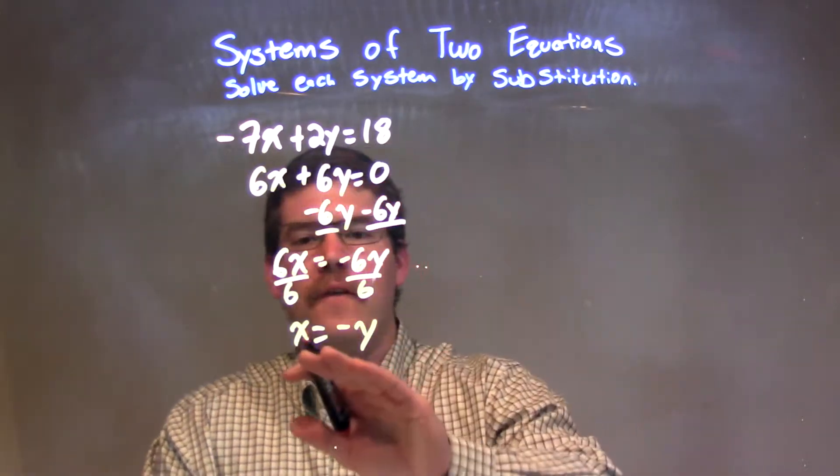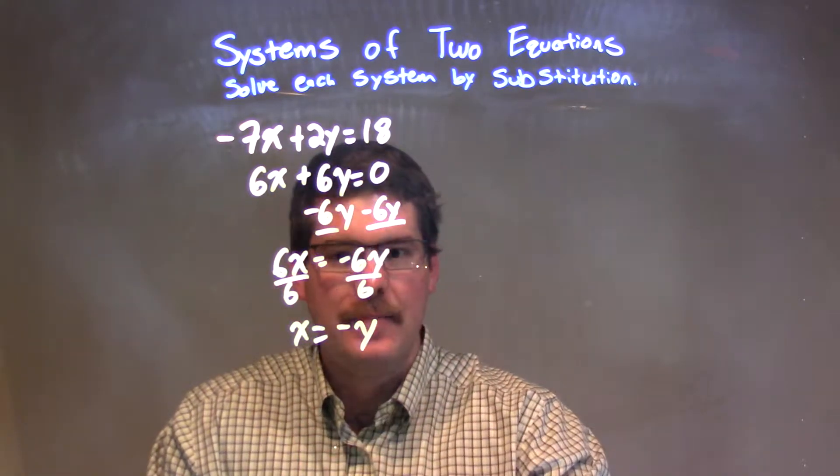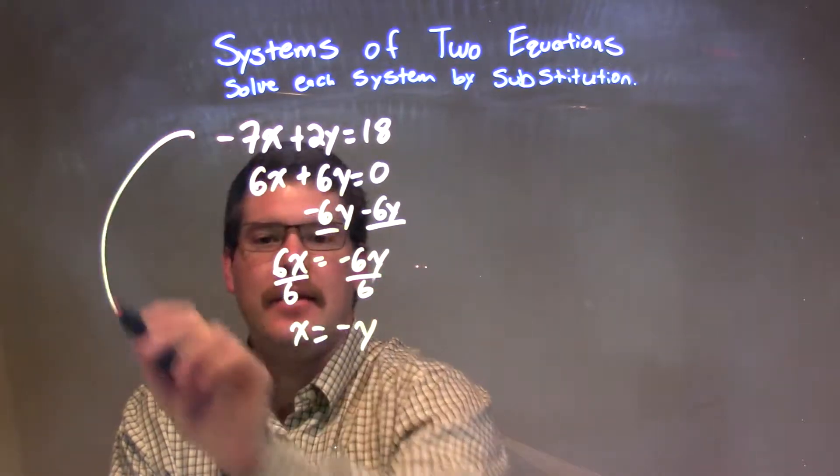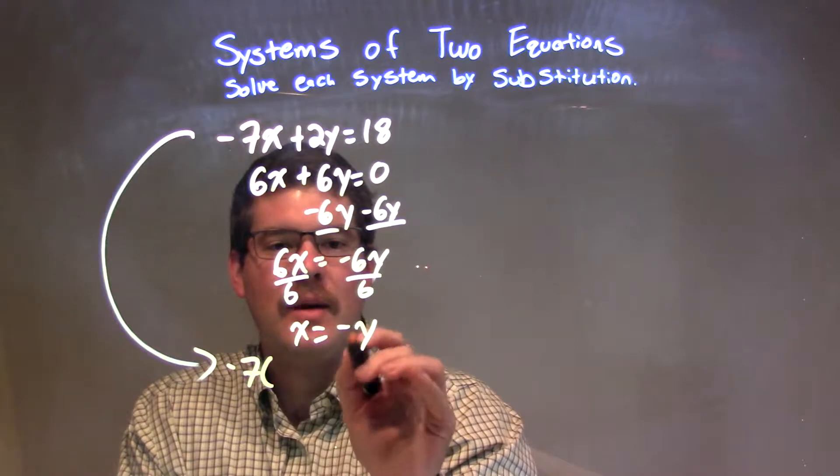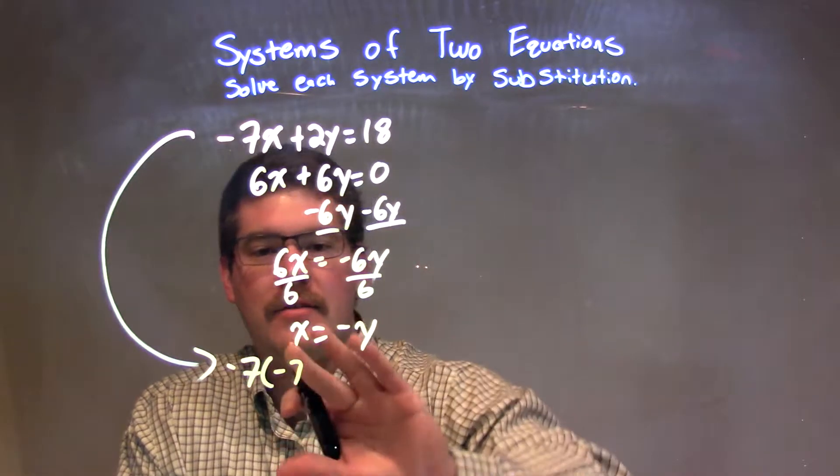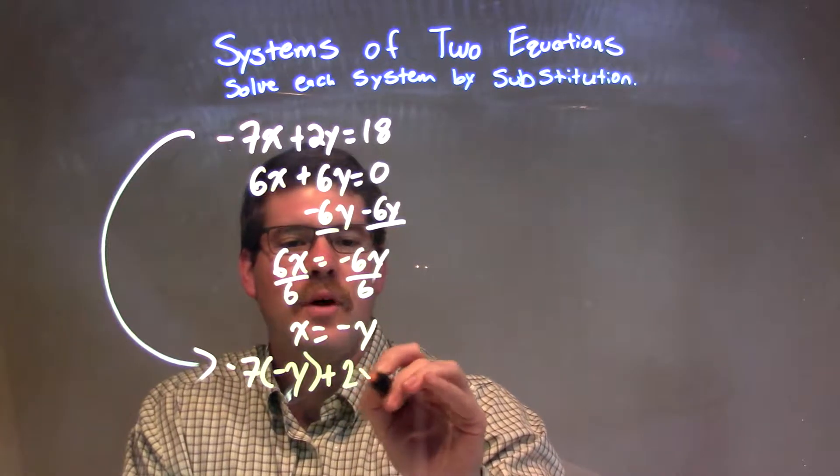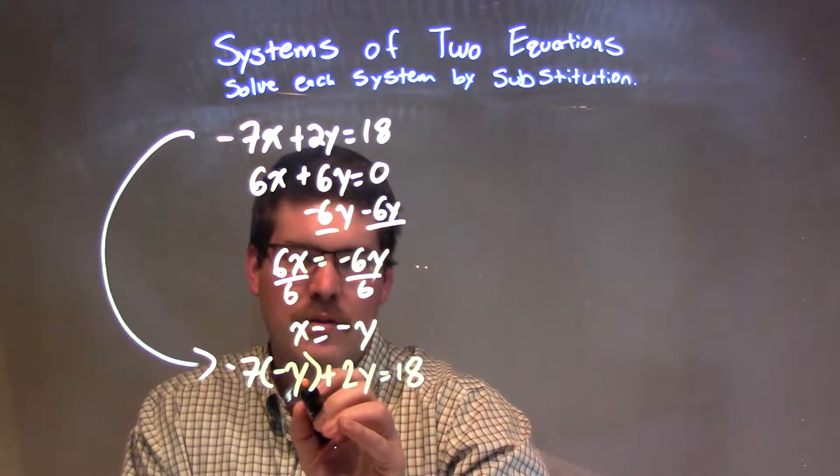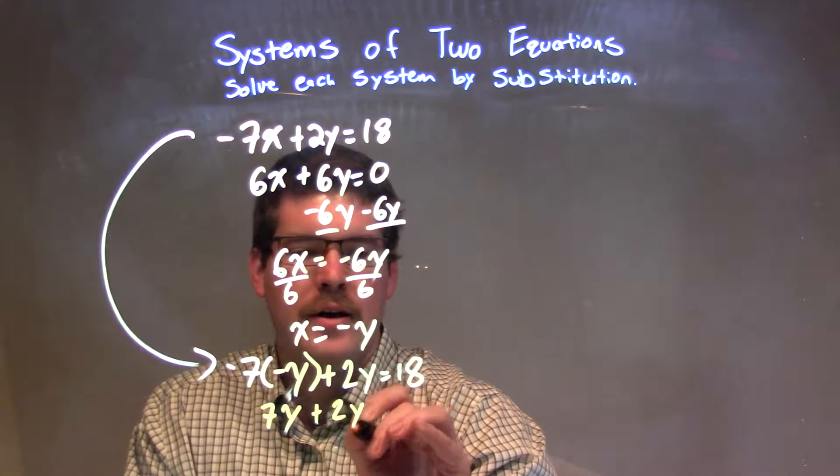So, we're going to go to our first equation, and we're going to plug that in. Instead of x, we're going to put a negative y in. So our first equation, let's go right here. I'm going to bring it down. I took a lot of space, but it's okay. Negative 7, and instead of x, I'm putting a negative y in. Negative y plus 2y equals 18. Negative 7 times negative y is positive 7y, right? Negative times negative is positive, plus 2y equals 18.